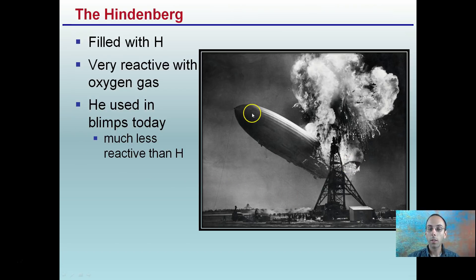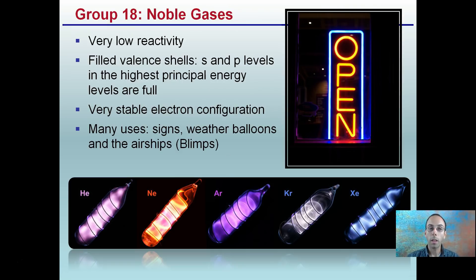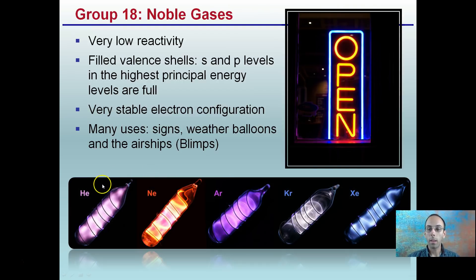Lastly, touching on some of the major element families within the periodic table: the noble gases. Group 18 is all the way on the right-hand side. They have very low reactivity, a filled valence shell, and their S and P levels at the highest principal energy level are also full — a very stable electron configuration. As a result, they tend to be used in signs, weather balloons, and airships such as blimps. A neon sign is an example — neon is a noble gas. As is helium, and xenon lights, typically found in cars. With very low reactivity, we can add electricity to noble gases and they glow instead of exploding.